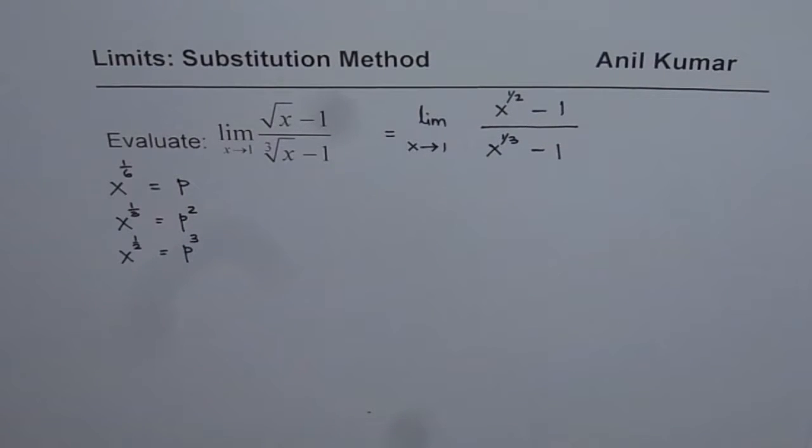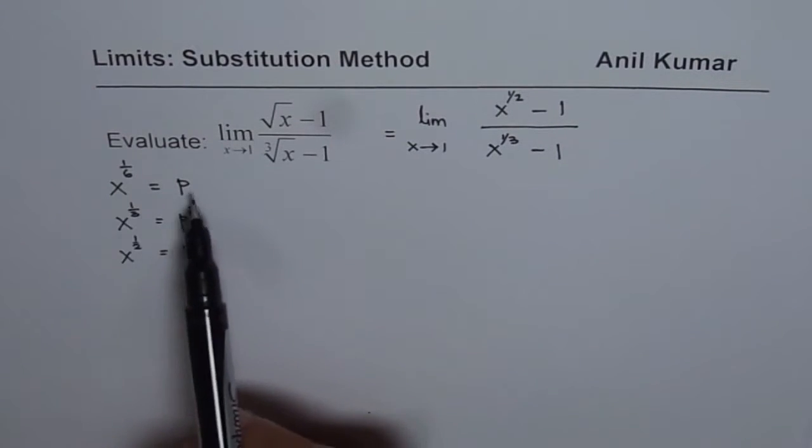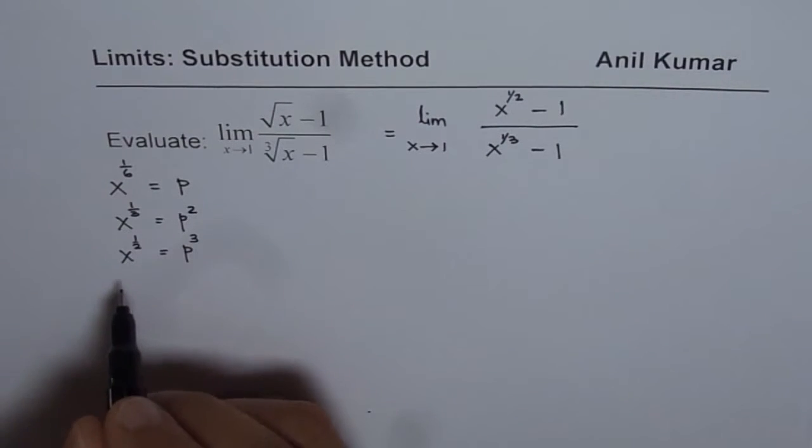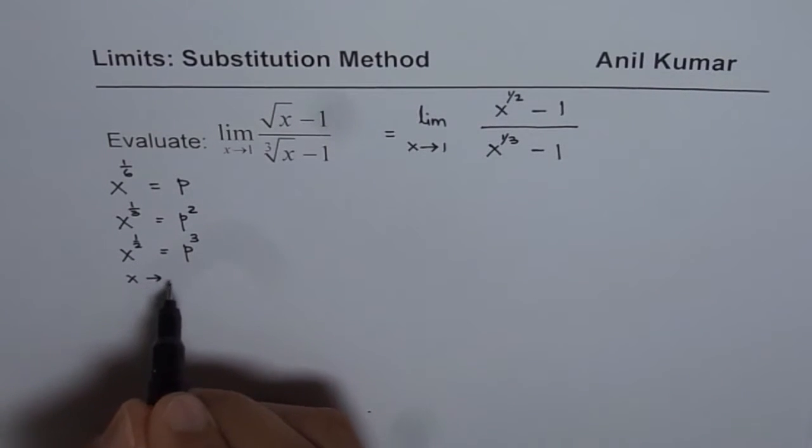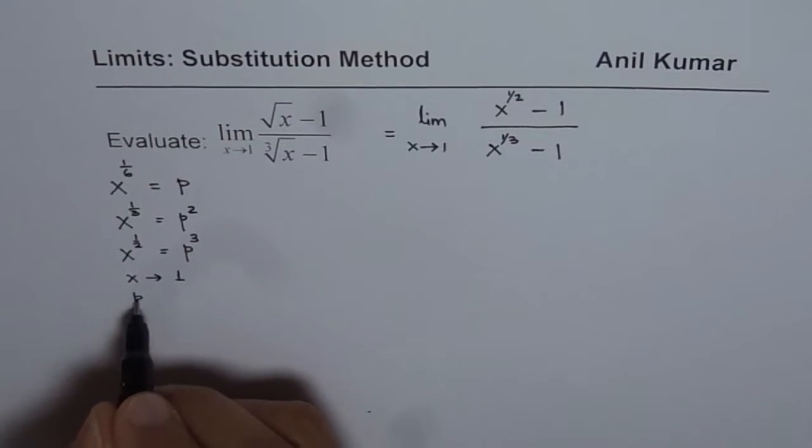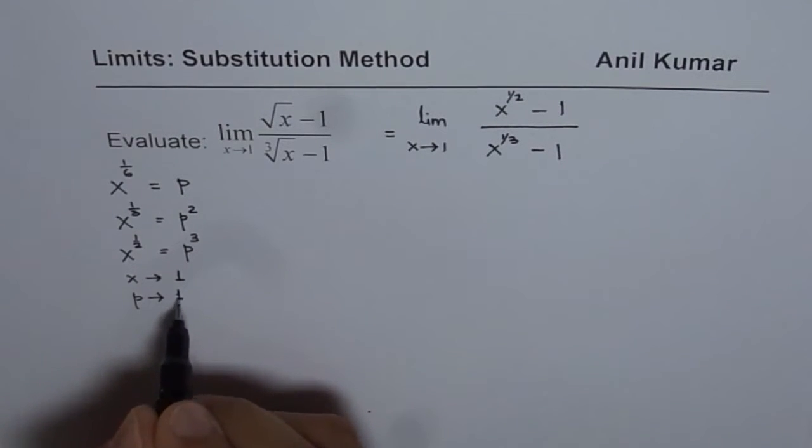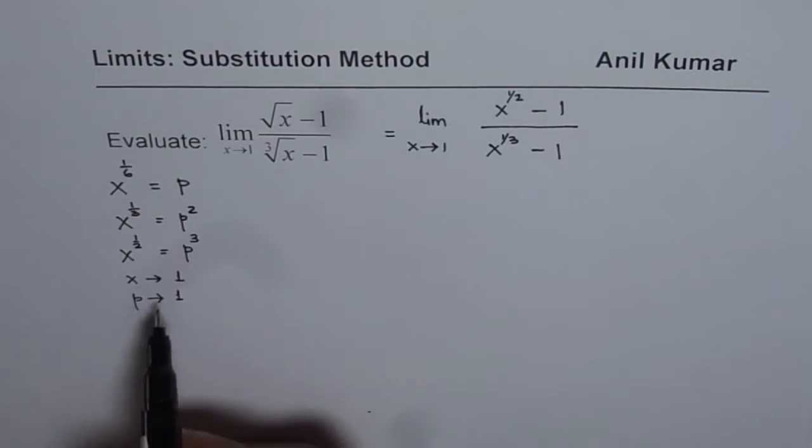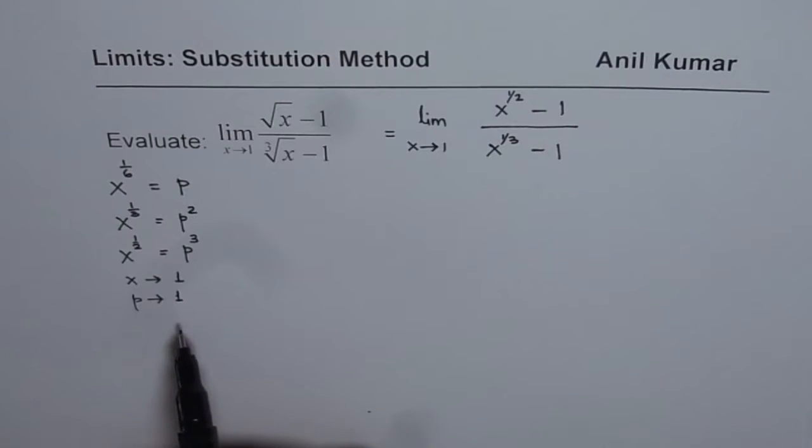So it is because of this that the substitution is for x to the power of 1 over 6 as p. Now when you substitute that, then as x approaches 1, what value will p approach? p will also approach 1 since sixth root of x is also 1, right?